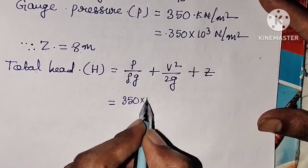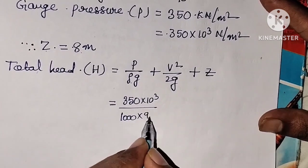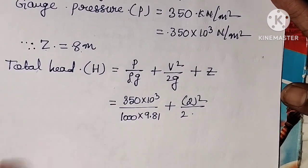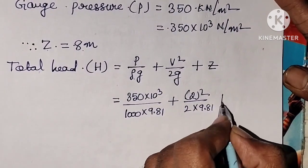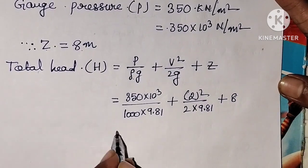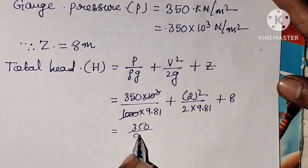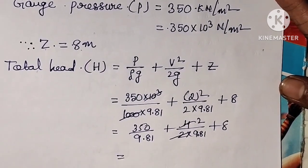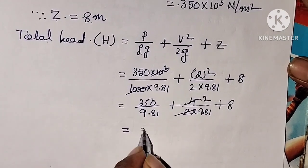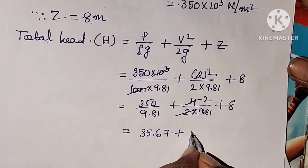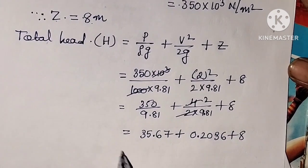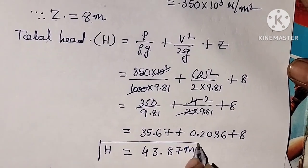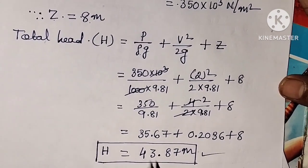So, P value is 350 into 10 cube, divided by density of water 1000, into acceleration due to gravity 9.81, plus V square — so V is 2, giving 2 square — divided by 2 into 9.81, plus Z equals 8. The 10 cube and 1000 get cancelled, giving 350 by 9.81 plus 4 by 2 into 9.81 plus 8. That gives 35.67 plus 0.2036 plus 8, which equals 43.87 meters. Therefore, total head is 43.87 meters. This is the final answer.